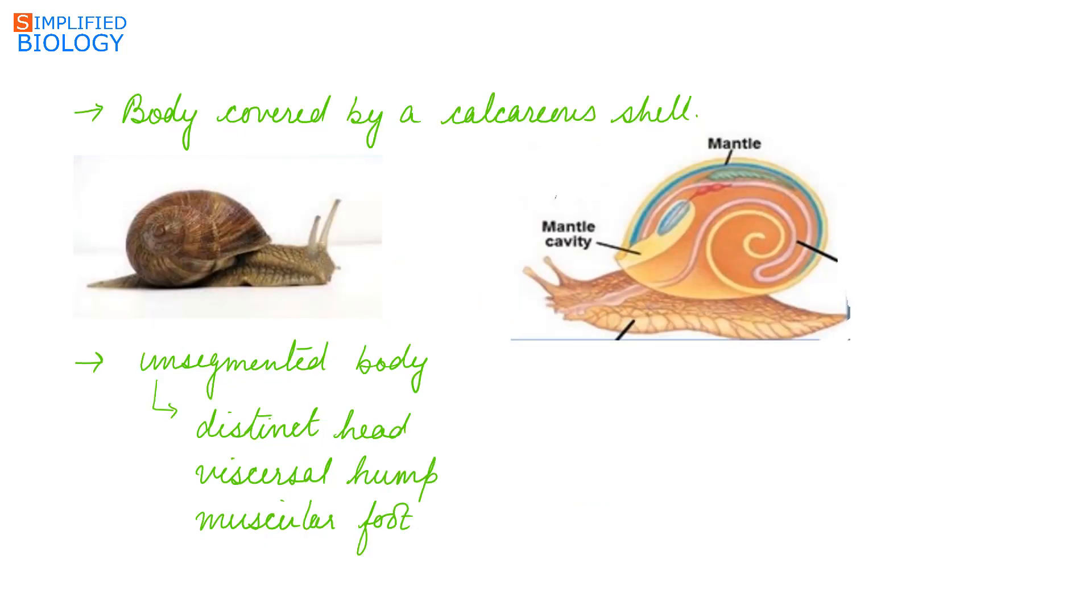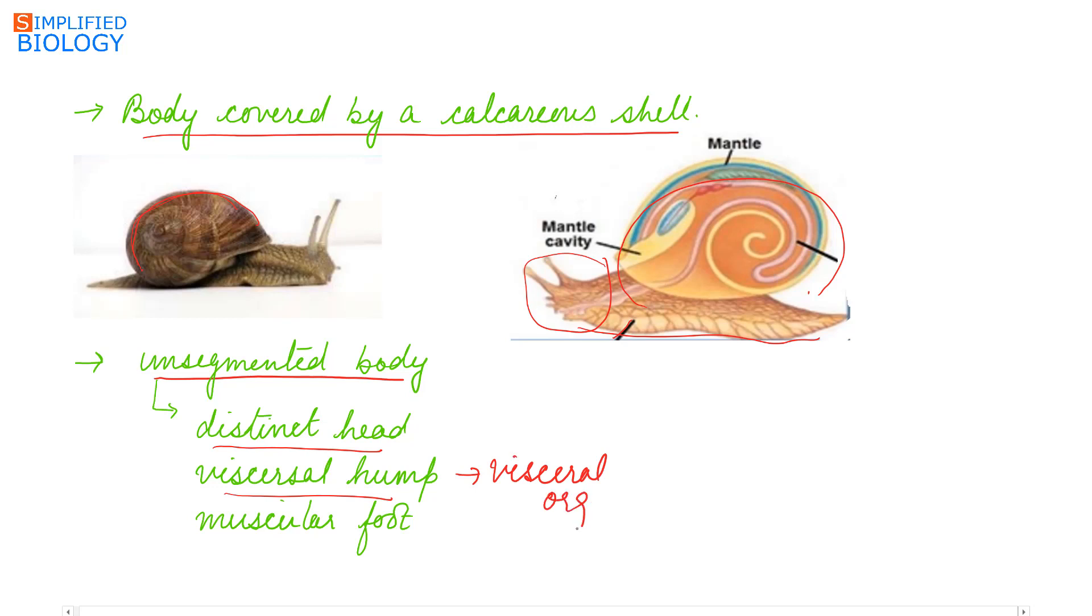The body is covered by a calcareous shell. They have an unsegmented body that can be divided into three parts: distinct head, visceral hump, and a muscular foot. The visceral hump has the visceral organs like organs for digestion and circulation, while the muscular foot helps in locomotion.